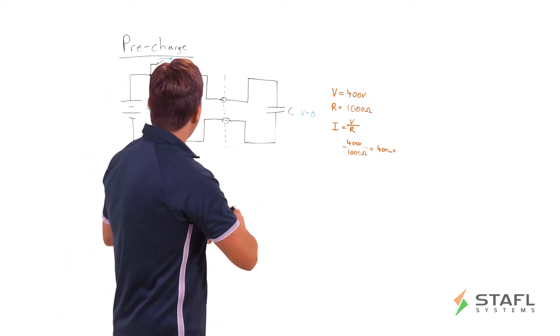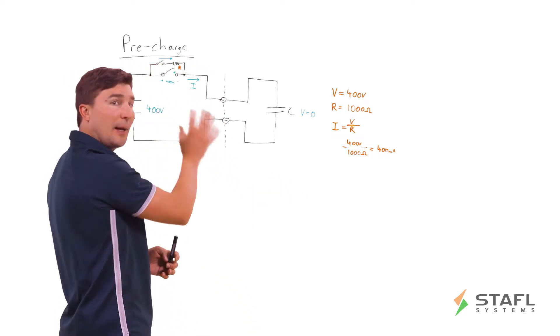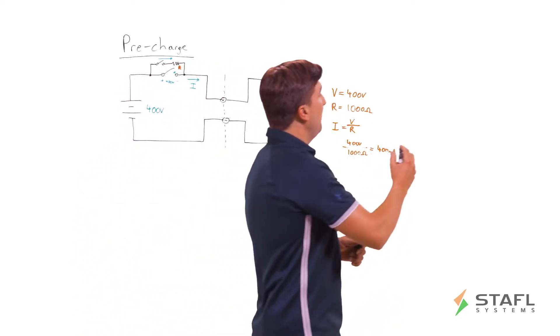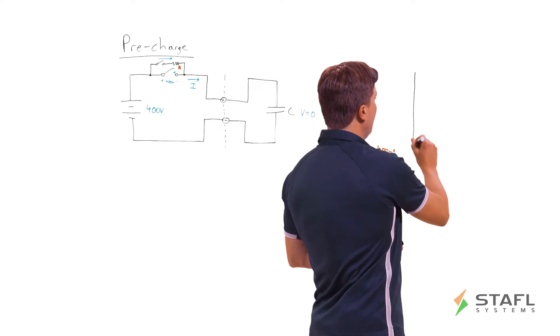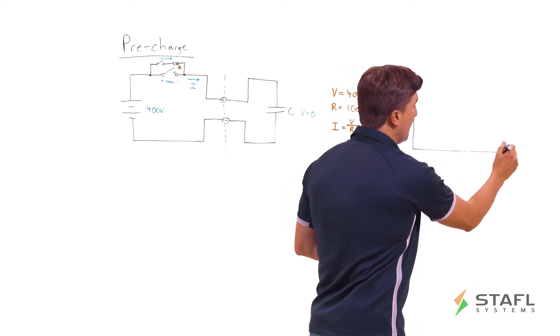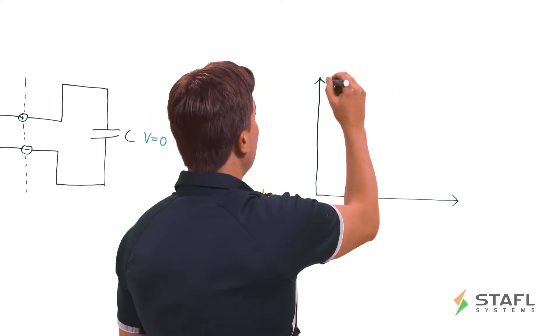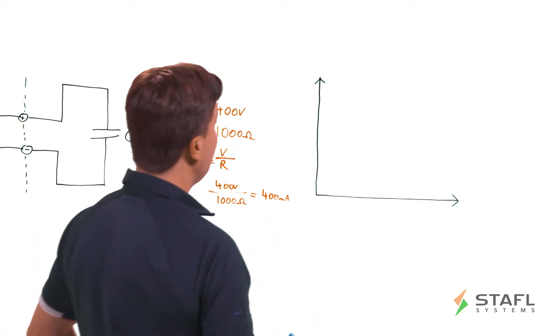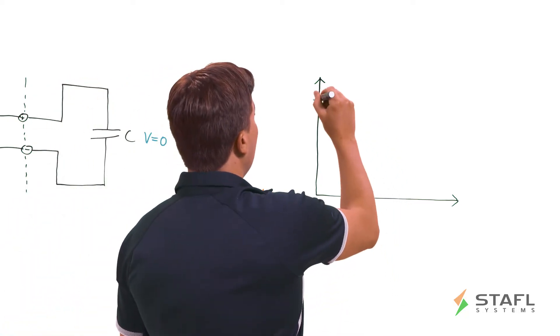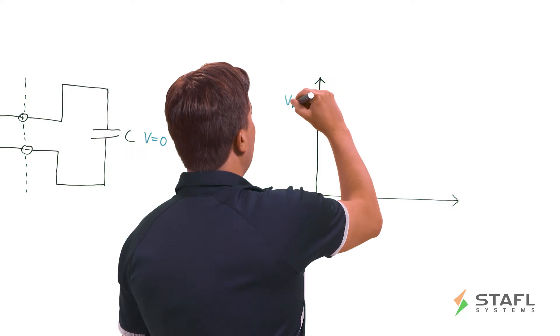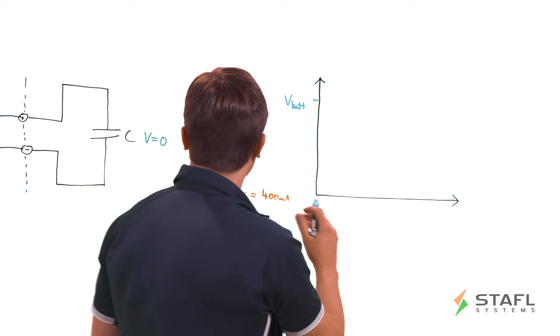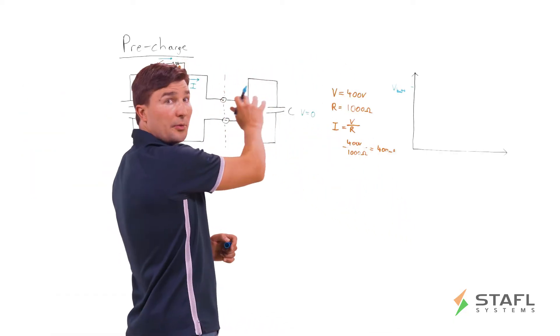But what does it look like after we close that switch? What happens then? So if we go on over here and we plot the voltage of the capacitor, I'll use blue for this. Eventually, we want to charge it up to the same battery voltage so that we have no current flow through this circuit.